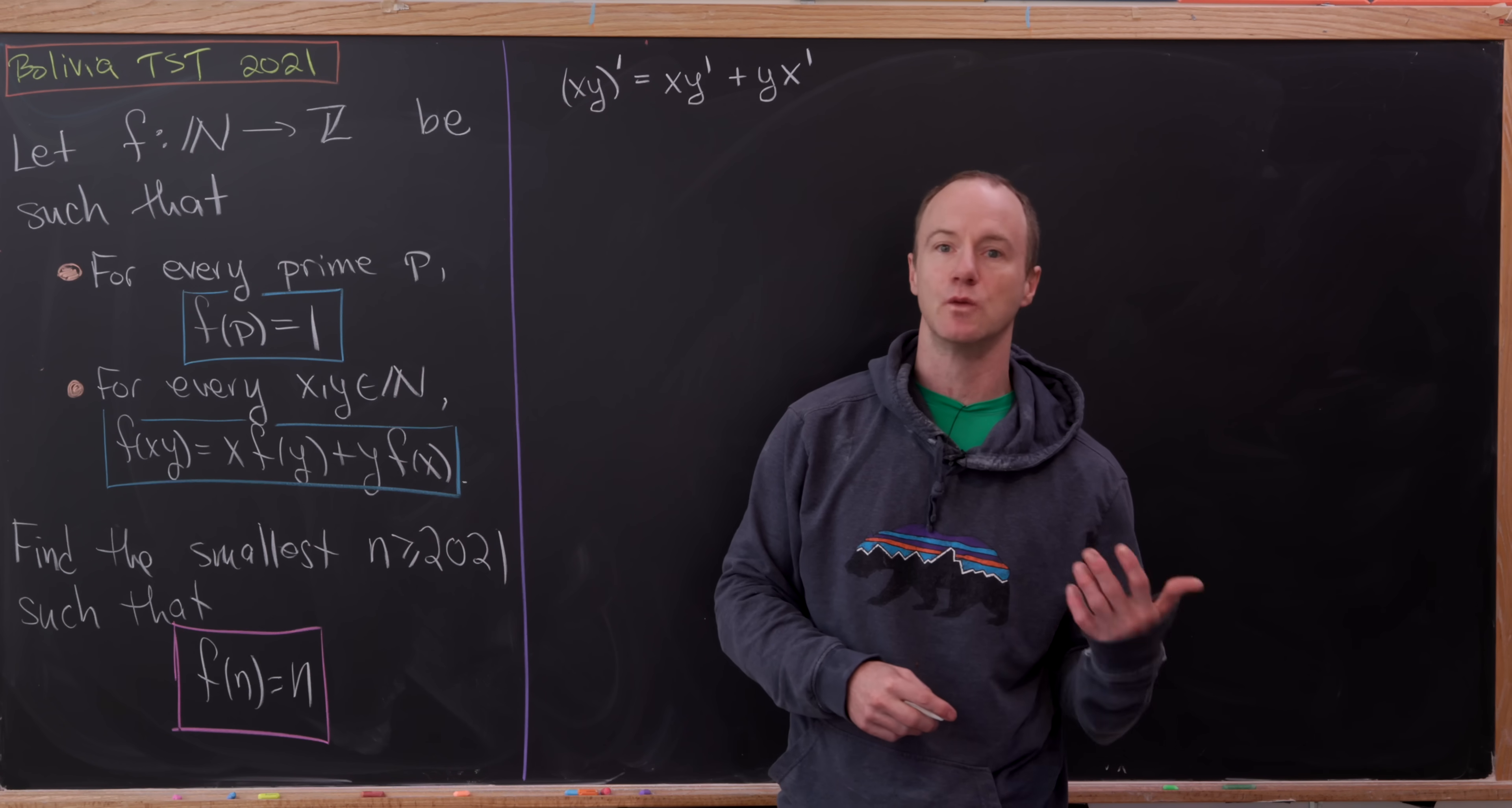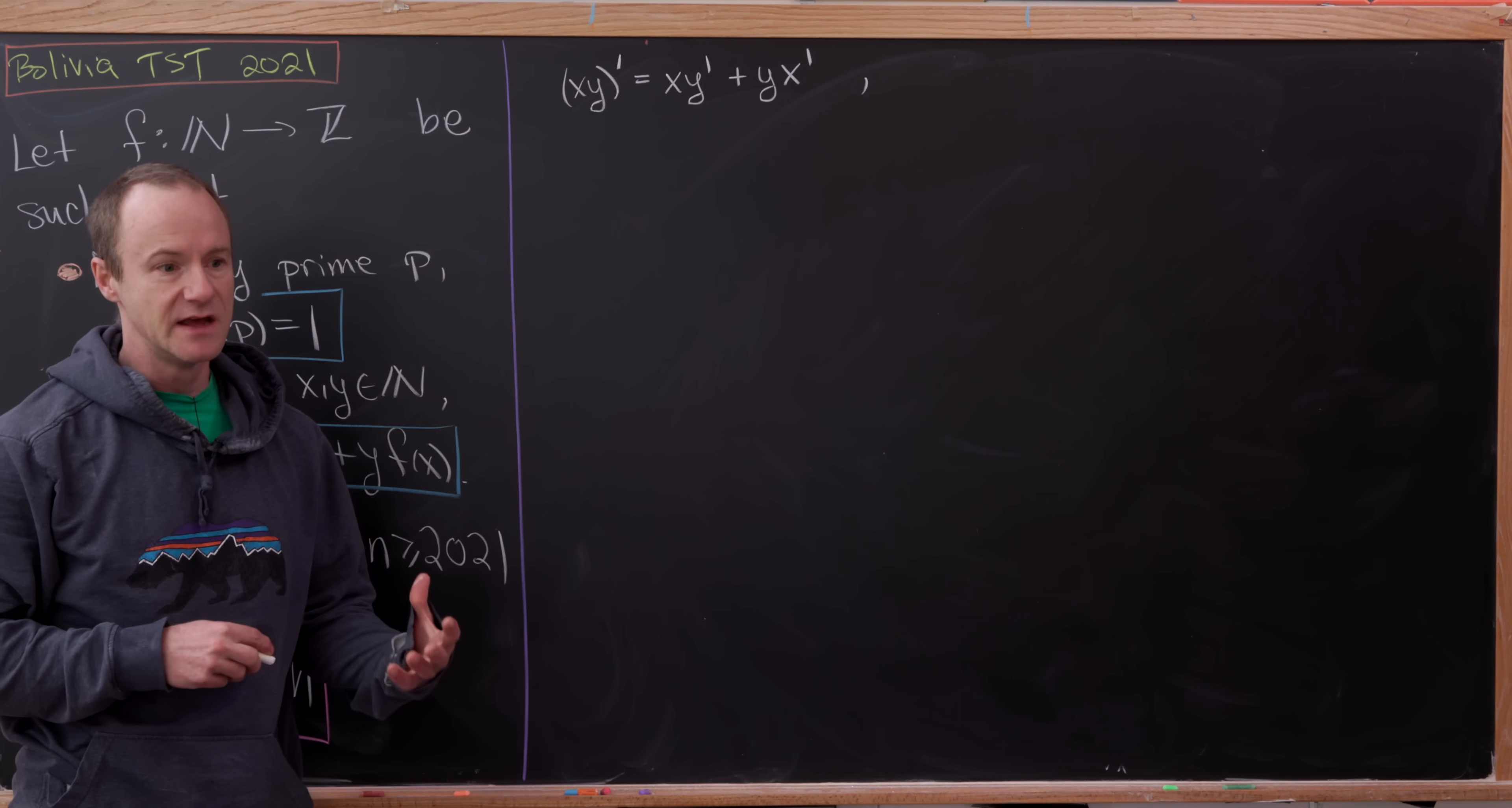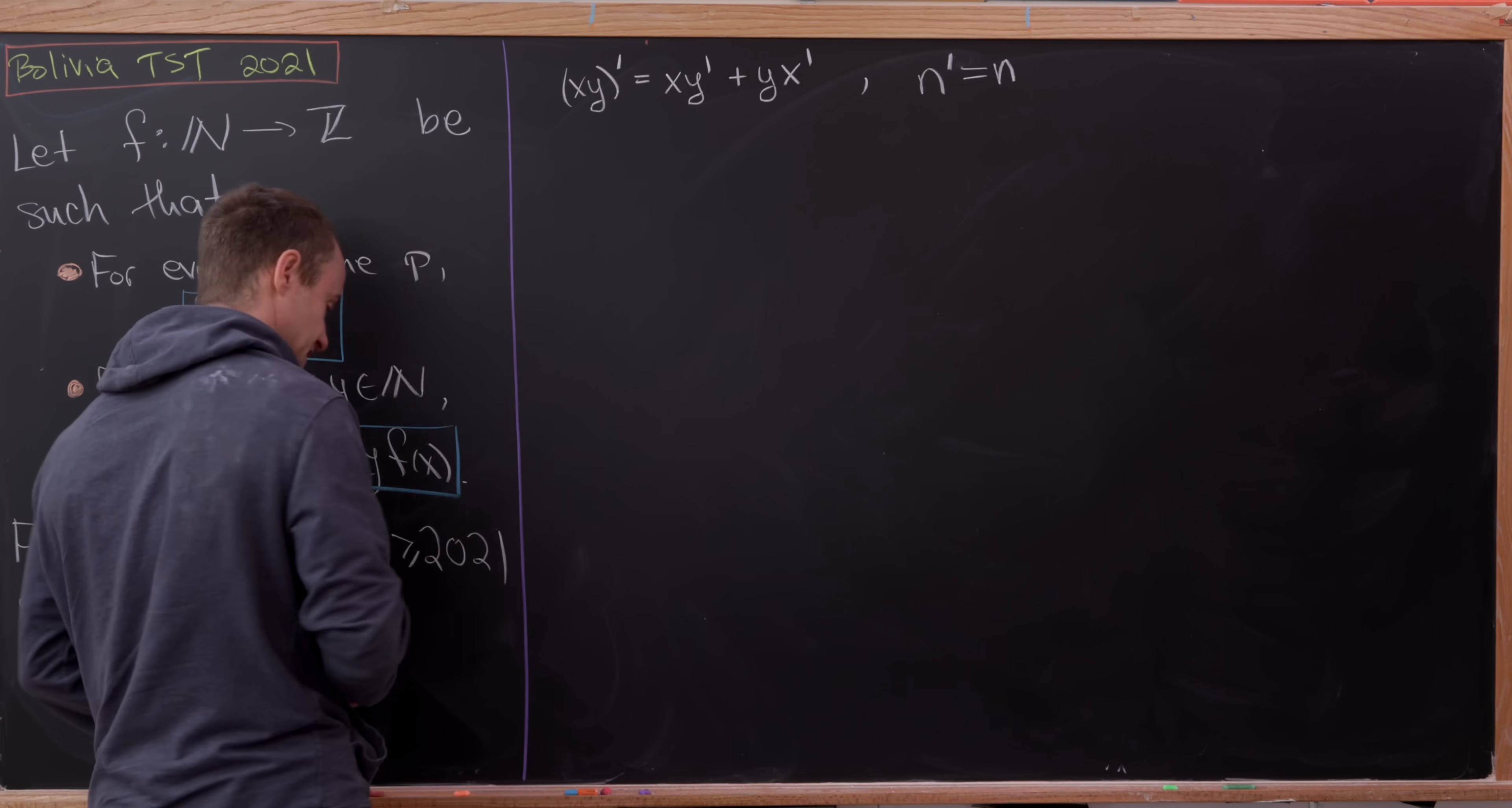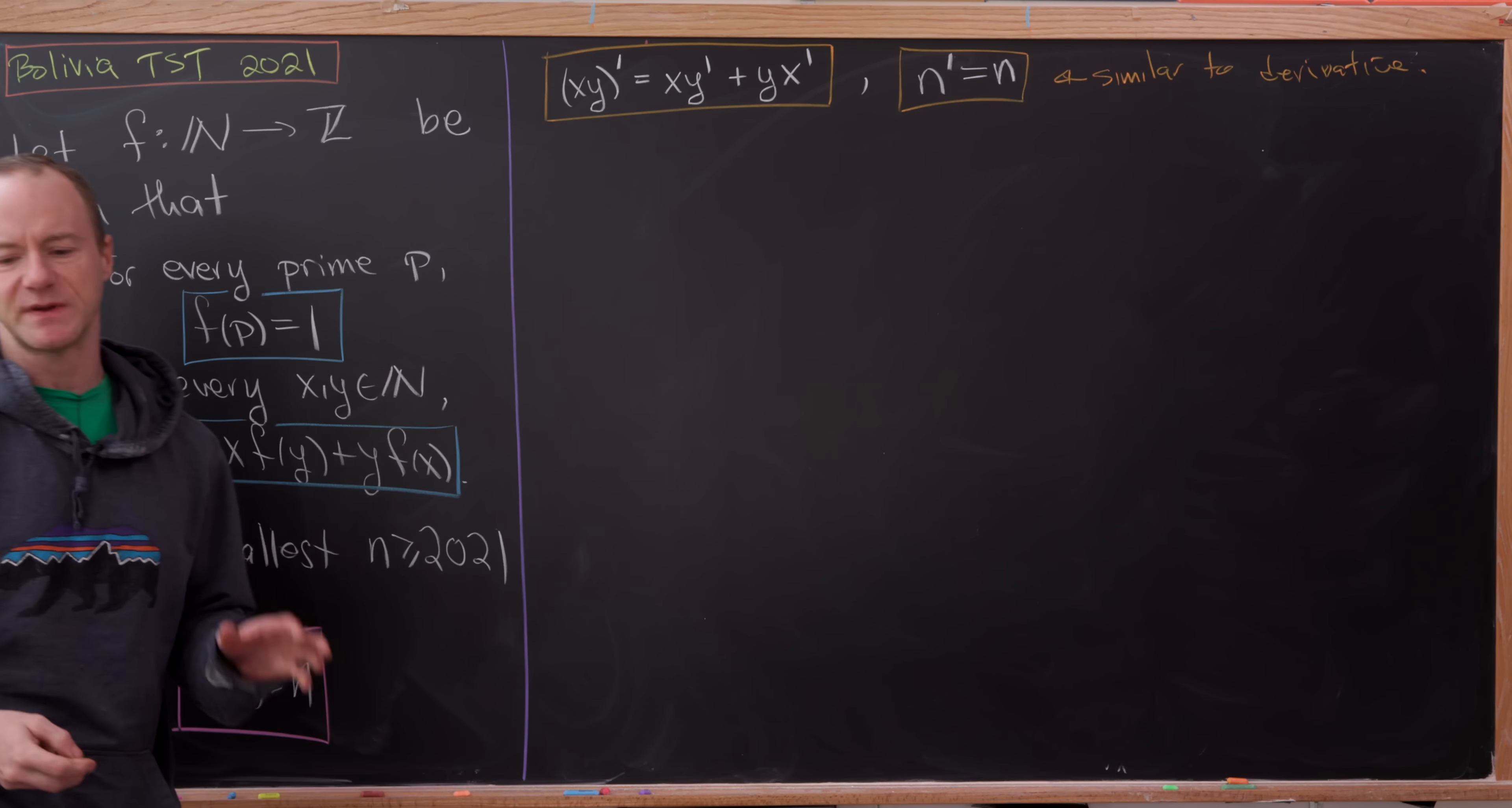Then this looks exactly like the Leibniz rule or the product rule for derivatives. So anyway, let's get down to what we want to show here or what we want to find. Our goal is to find the smallest natural number bigger than or equal to 2021, such that f(n) is equal to n. But in this new prime notation, that's like solving the arithmetic differential equation n' equals n. For an n value that is bigger than or equal to 2021. I'm not particularly going to use this prime notation. I really just wrote that down to see that this is really similar to a derivative. So now that we've done that, let's jump into the main solution.